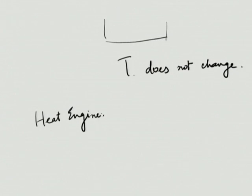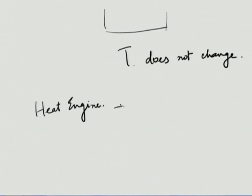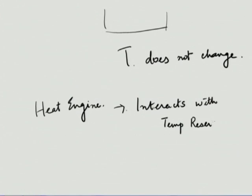Then we come to something called a heat engine, because we were talking of a device which converts Q to W. The engine is a device which probably interacts with a few temperature reservoirs — there is a Q transfer, and it itself is a cyclic device. So it is just taking Q and converting it into W. It is interacting with some few reservoirs, and there is a Q interaction between this engine and those reservoirs.